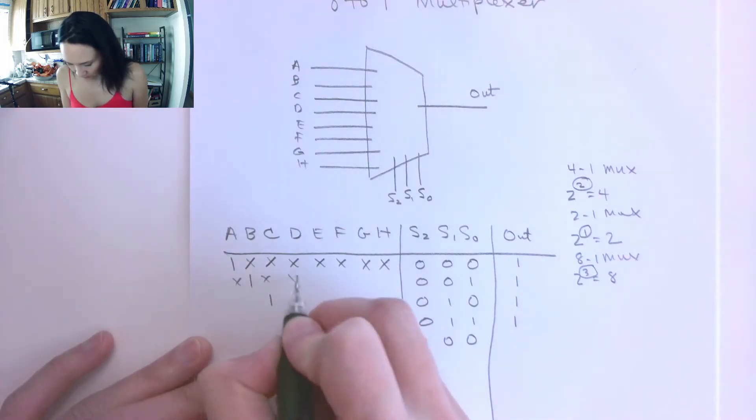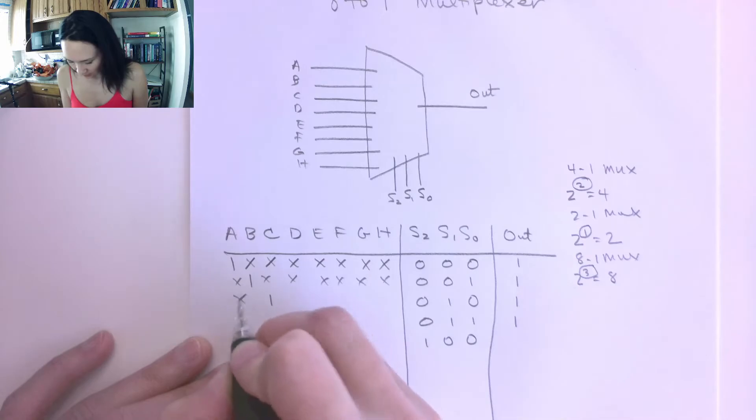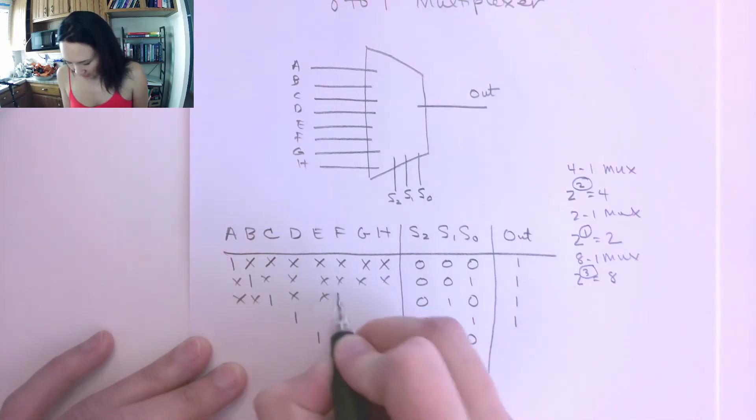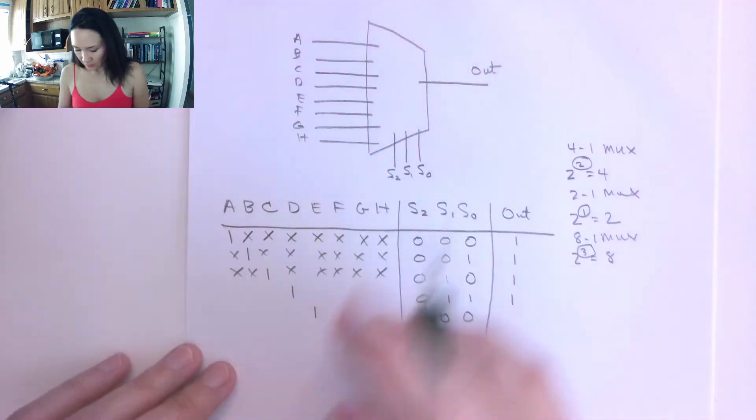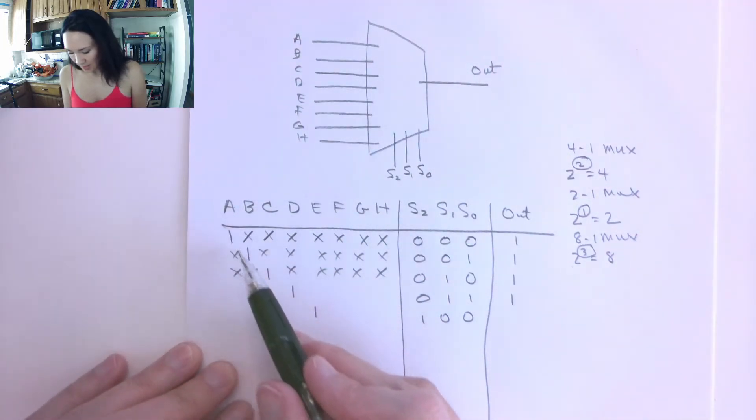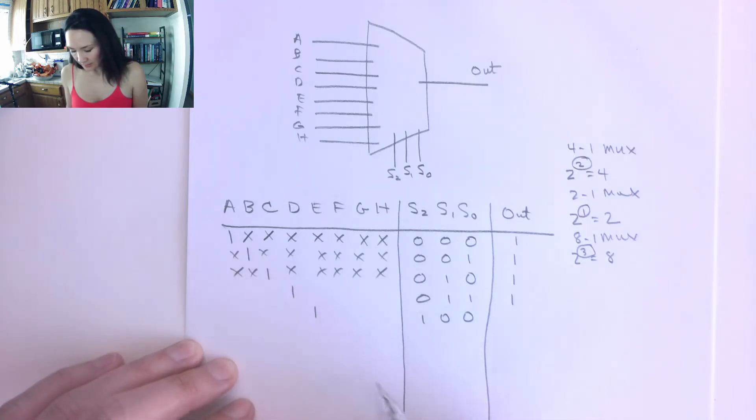So the rest of these, you could fill these in, are all going to be don't cares. And if you wanted to take the time to do that, you're just going to have basically a diagonal line of 1s that go all the way from A to H, because this is the one that is going to get selected and the rest of them are Xs, because we don't care.